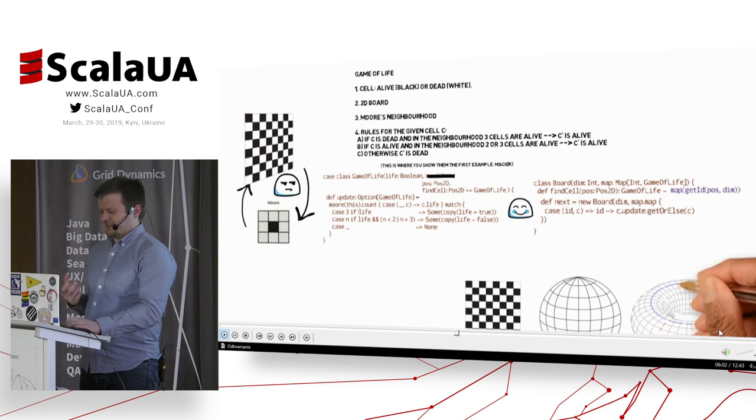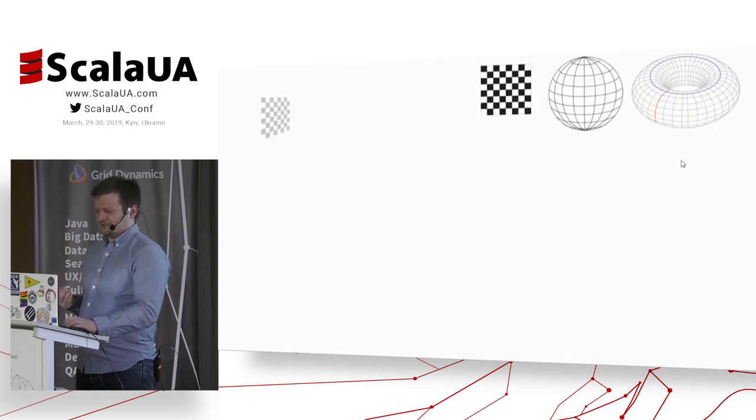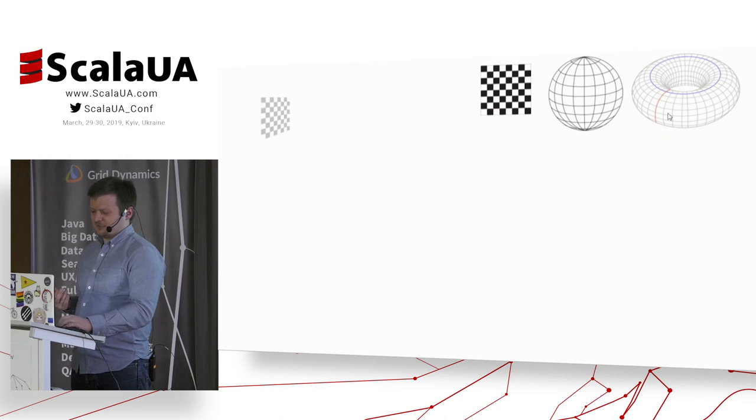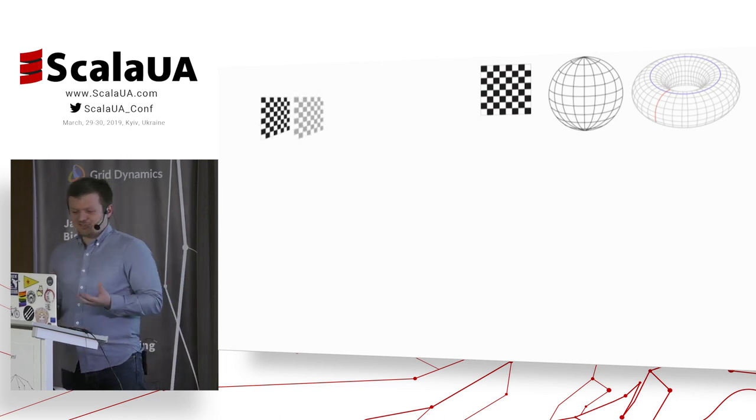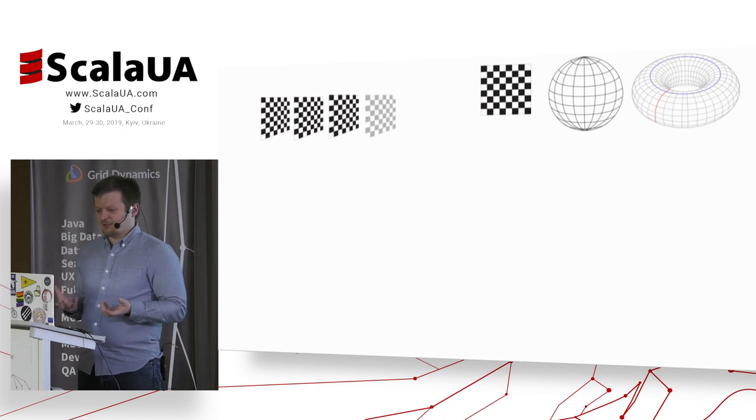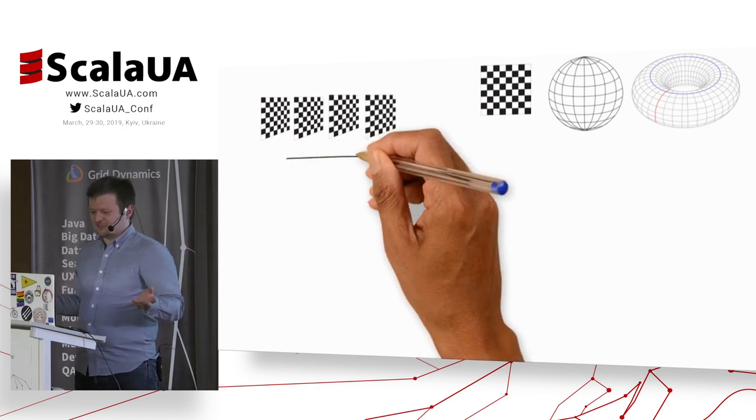And this creates something like a donut here, which can be traversed around from left to right and right to left. But also it can be traversed from north to south or up to down and down to up. This way, we don't have any edges anymore or any corners. Every cell has eight neighbors and we can just live with it.